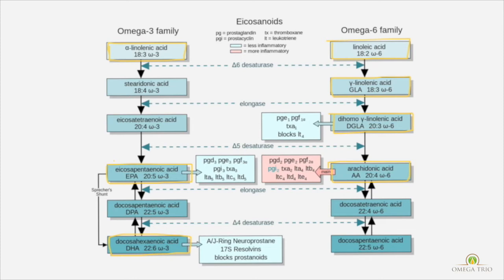An important thing to know is that the enzymes used in these pathways are actually shared by both the omega-3 and omega-6 pathways — so they compete. This is the reason why we have the ratio you may have heard of, where people suggest for every one omega-3 you have a maximum of four omega-6. If you can balance those out, even better. If you cut out your excess arachidonic acid, it will stop competing with these enzymes for the conversion to DHA, which is really beneficial.